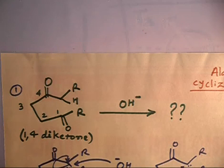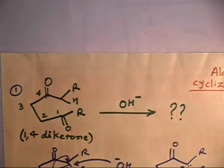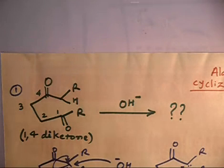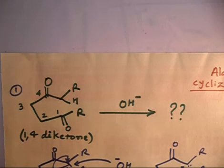If you have two keto groups in the same compound, you can make a carbanion and attack the ketone group within the same molecule. That is intramolecular aldol condensation. This is also called Dieckmann condensation — intramolecular aldol condensation is also called Dieckmann condensation.